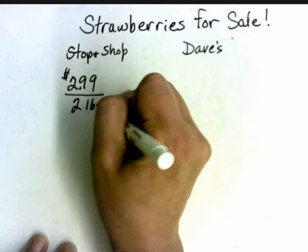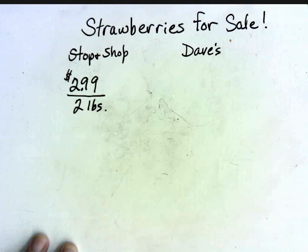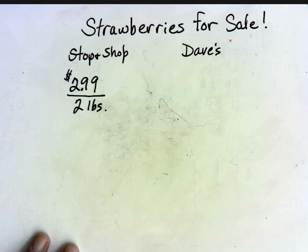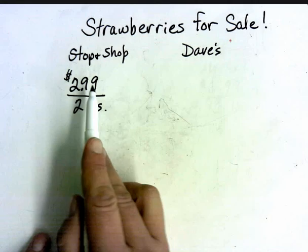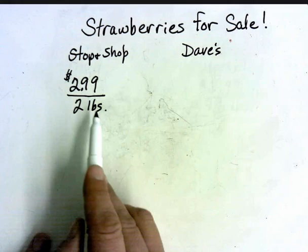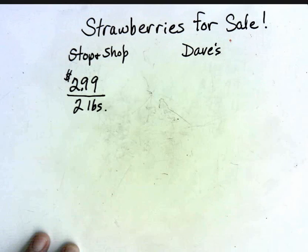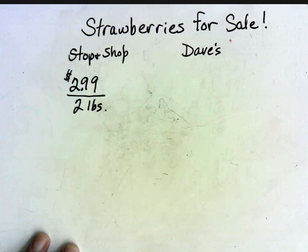So that's how I would write that. Anybody know what that's called? It is called a rate, because you're comparing two quantities or two amounts in ratio form.